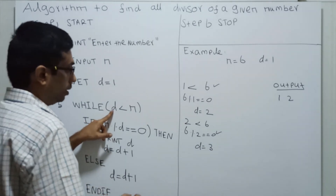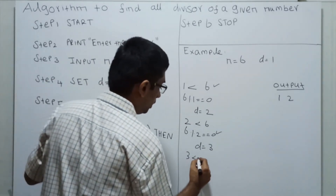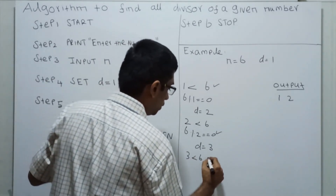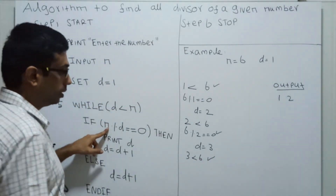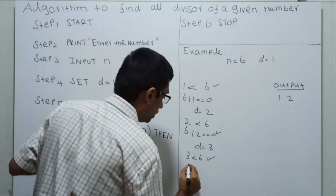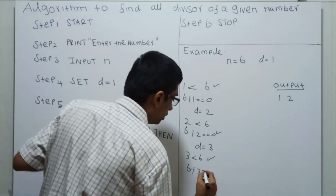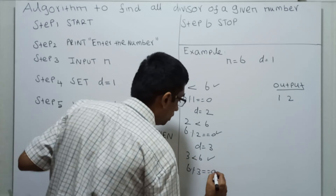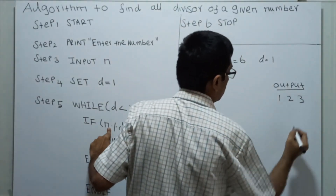3 less than 6 — it is true. Then 6 mod 2, then 6 mod 3 equals 0. Then 3 will get printed.